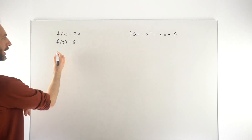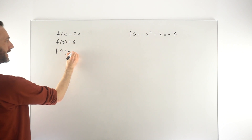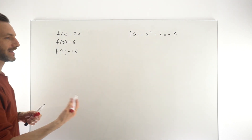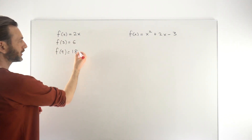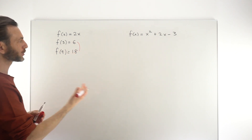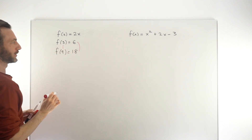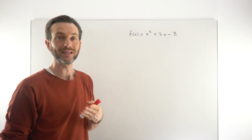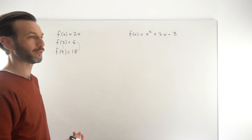That sounds quite complicated, but for example if we had f of 9, then 2 times 9 is 18. We would be looking to gain some information about the behavior of this function by comparing these two output values and seeing how much they changed in comparison with how much the input values changed. For certain types of function that's going to be quite different to other types, and that gives us insight into the behavior of that function.